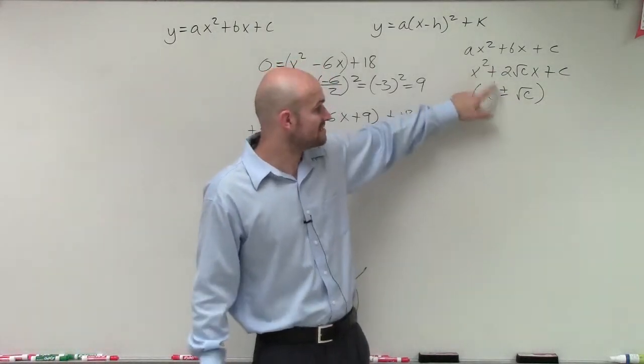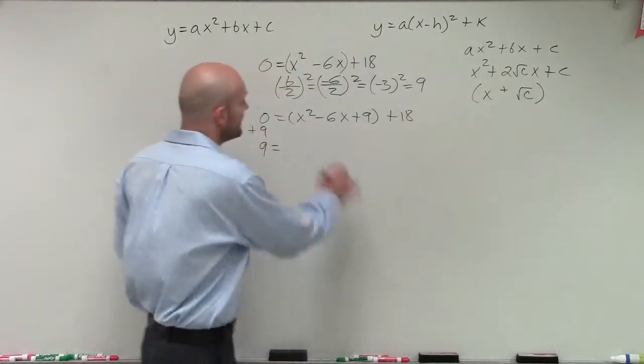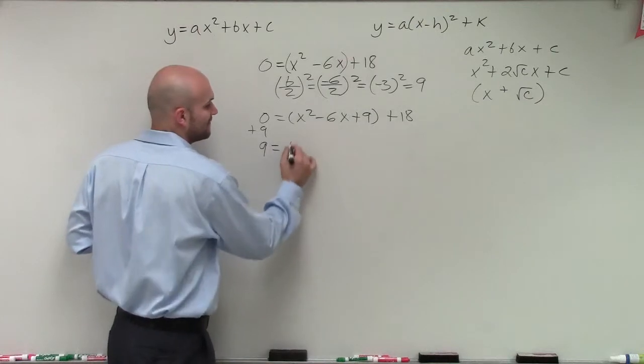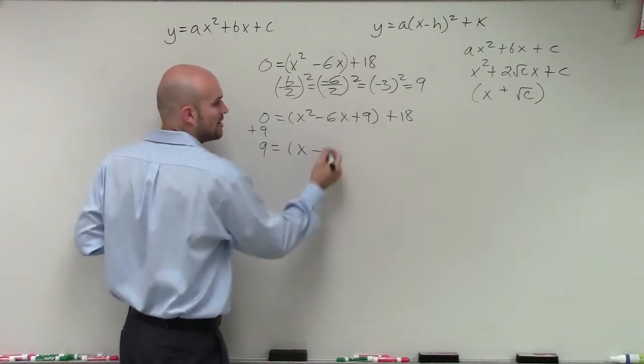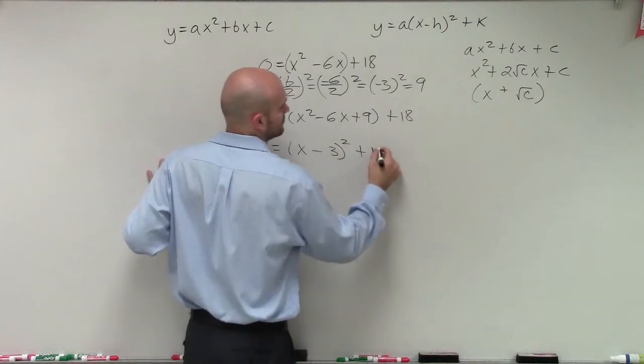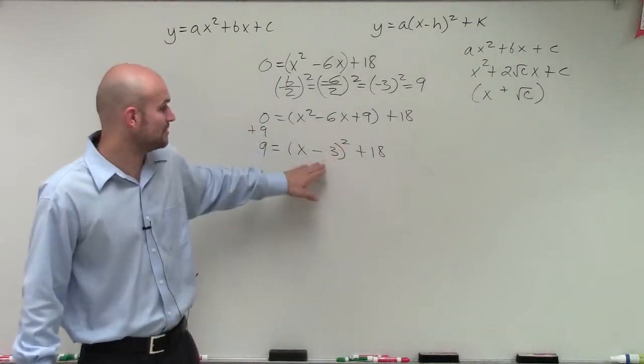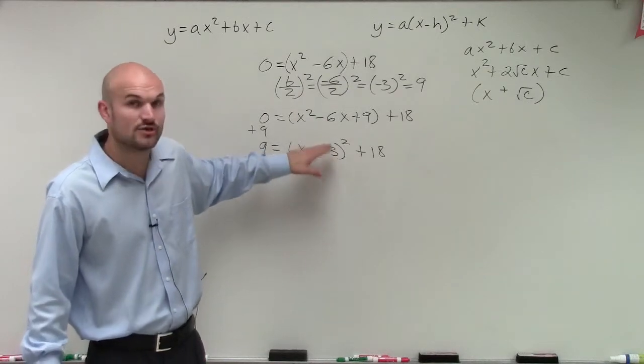It's either going to be both positive or both negative, depending on your middle term. In this case, my middle term is negative, so it's going to be x minus the square root of c, which is 3. So that is my trinomial factored into a binomial squared, which now is in this form, which is good, because now what I can do is apply my inverse operations.